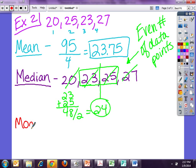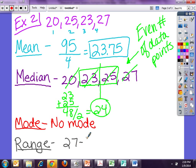So let's see. Let's look and see if I can find my mode. 20, 25, 23, 27. Do I have any number that occurs more than any other? No. So I have no mode. And then lastly, I have my range. My range is the distance from the lowest number to the highest number. So I take my highest number, which is 27, and I subtract my lowest number, which is 20, which gives me a range of 7.